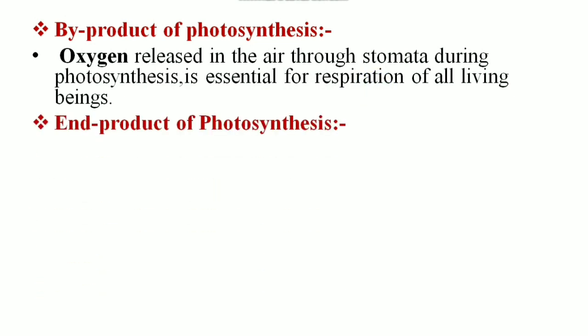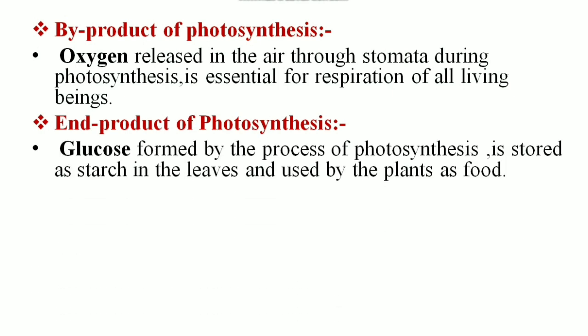Then the end-product of photosynthesis. First is the glucose. It is formed by the process of photosynthesis and immediately after its formation it is converted into starch and that is stored in the leaves for the future use of the plants because the plants utilize starch as its food.